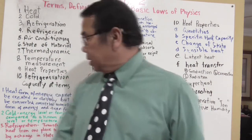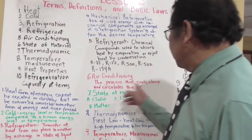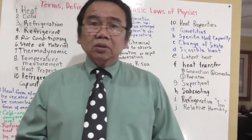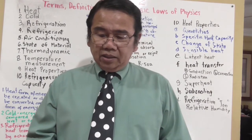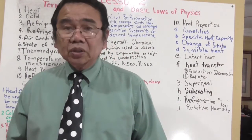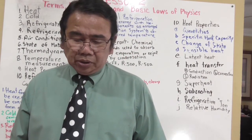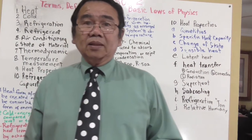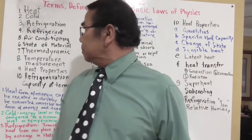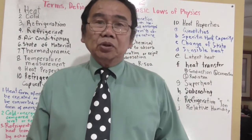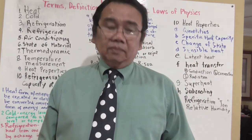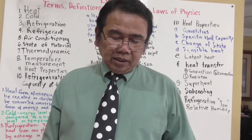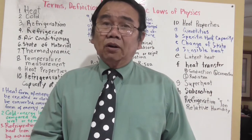Air conditioning is defined as the process that cools, cleans, and circulates the air while controlling the moisture content on a continuous basis. That means you cool the system and maintain the moisture level. The application of air conditioning deals with human comfort.